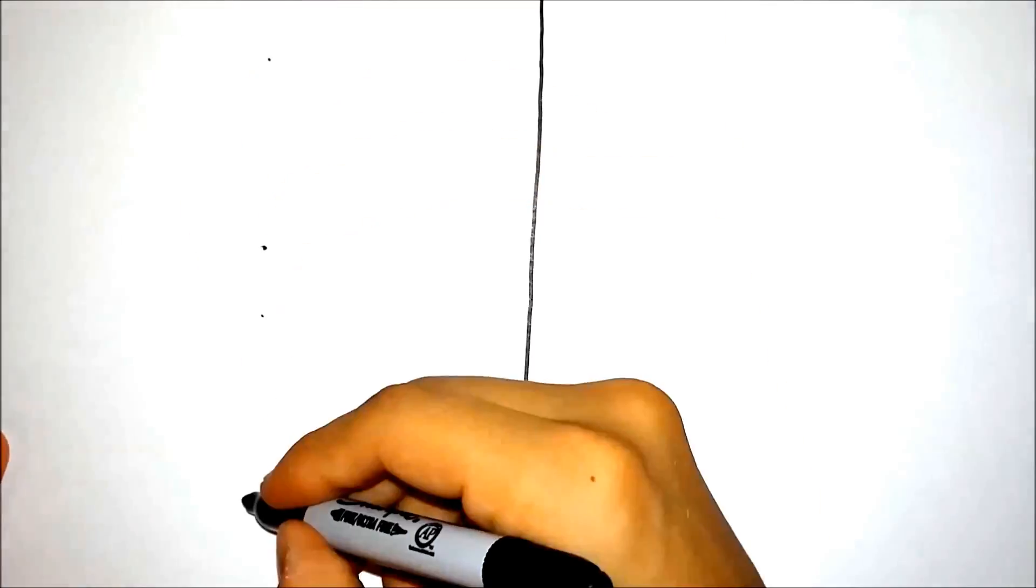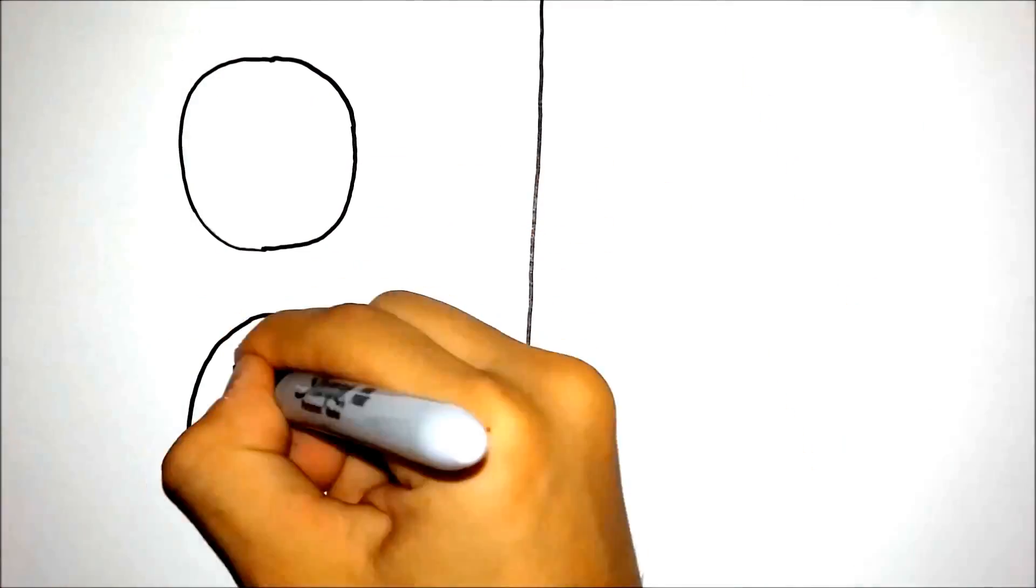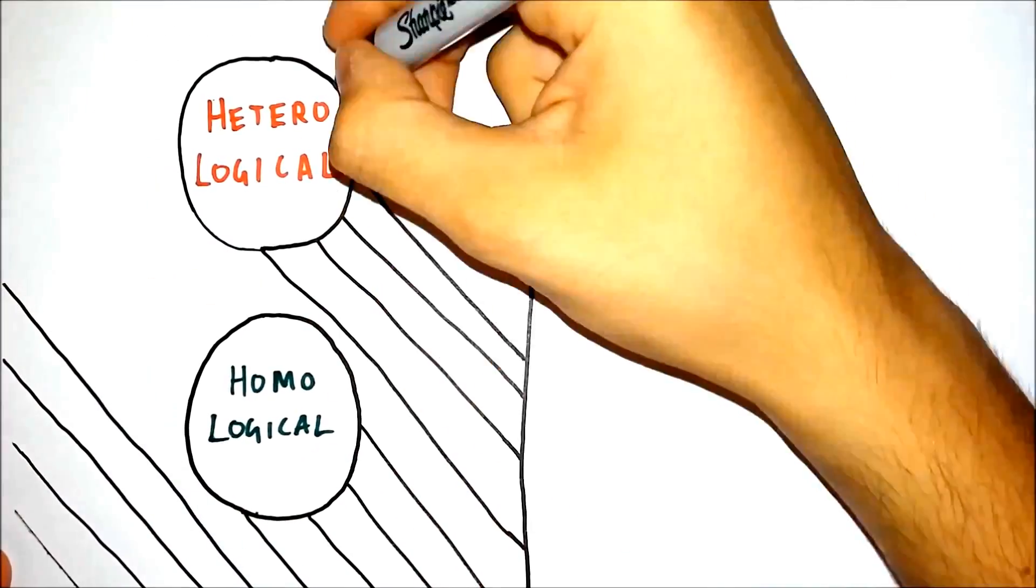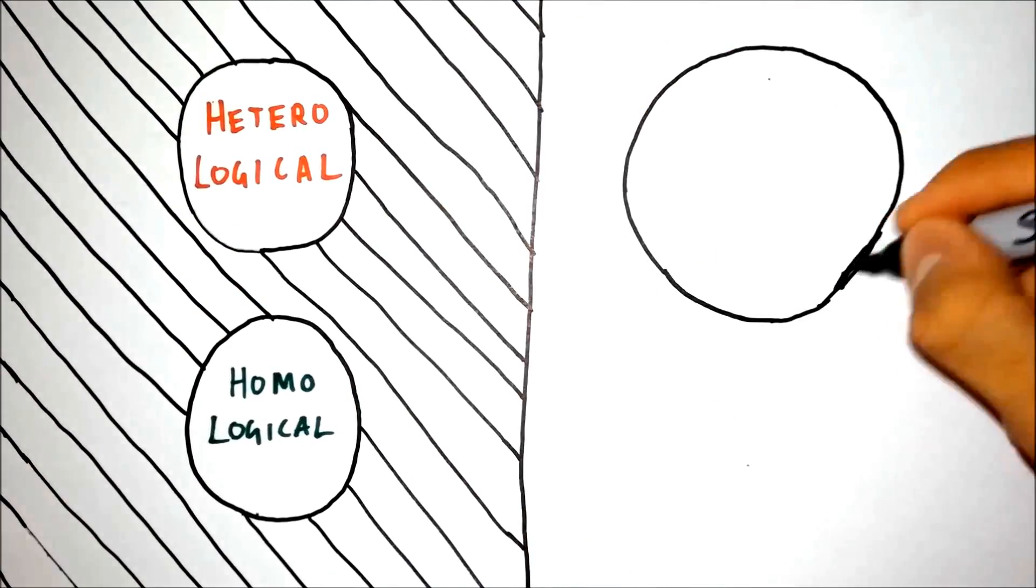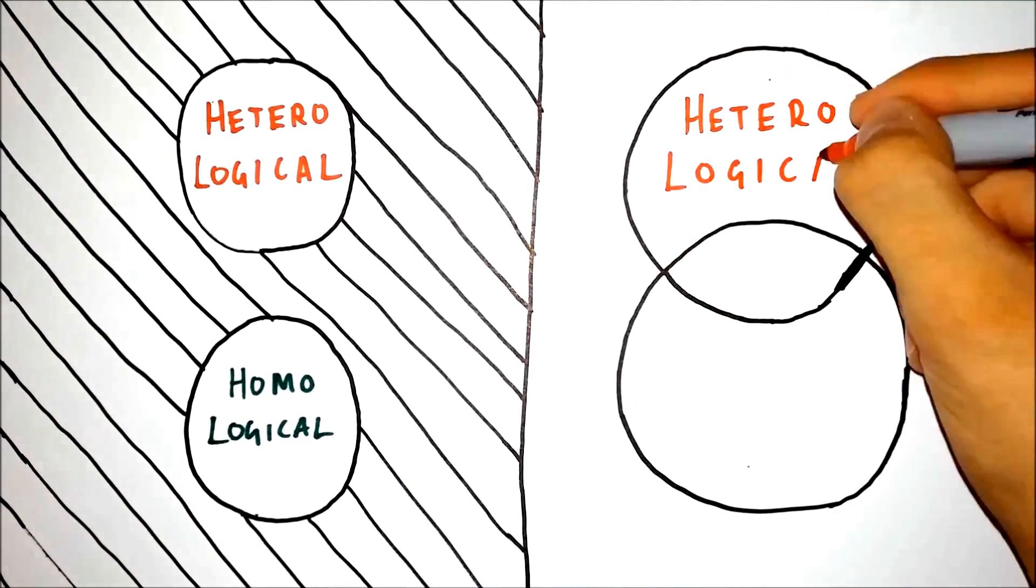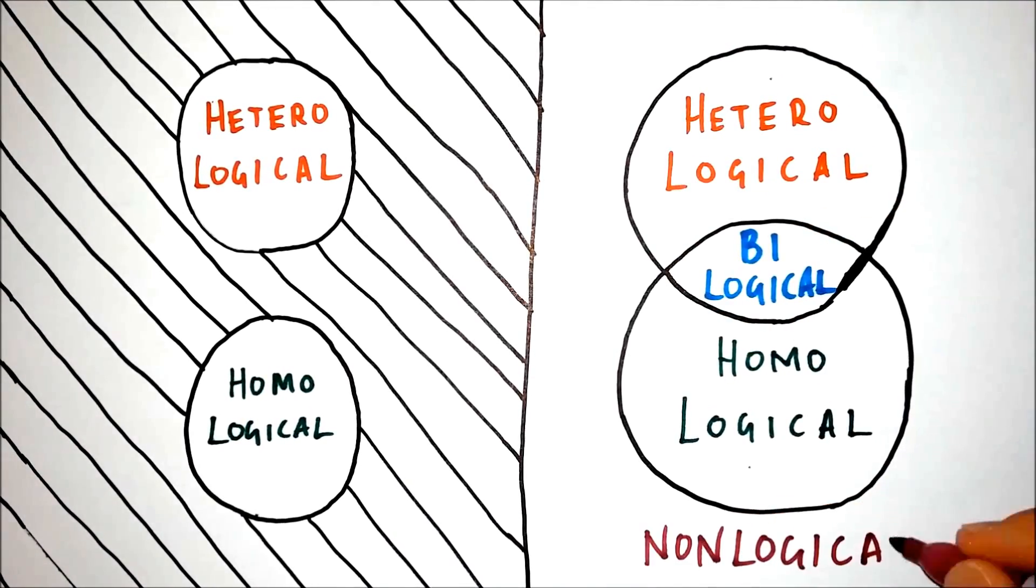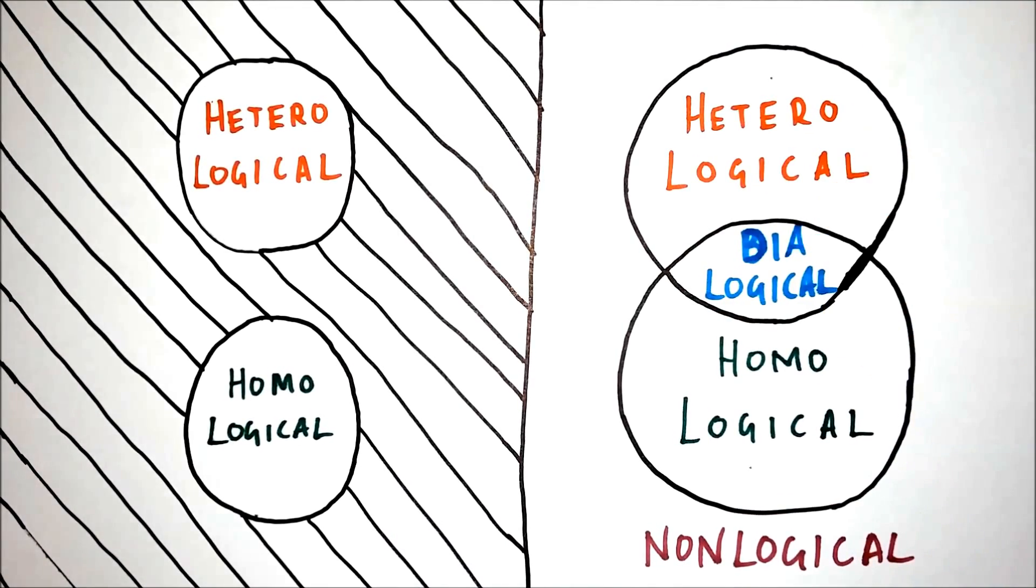One might now think that it could be logical that we create a new way to define words that includes not just words that do or do not describe themselves, but also words that both describe and do not describe themselves, and words that neither describe nor do not describe themselves. But this system would be useless, especially for mathematical systems, for it could not possibly give us any way to analyze statements logically.